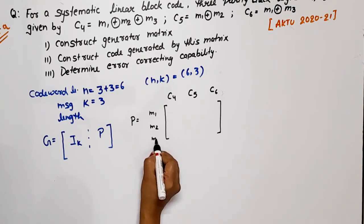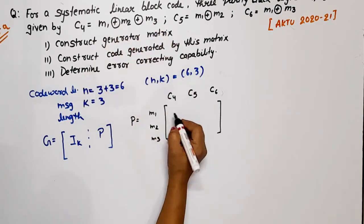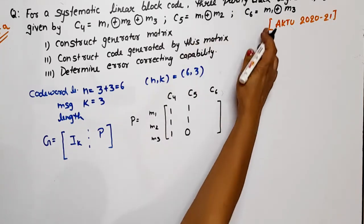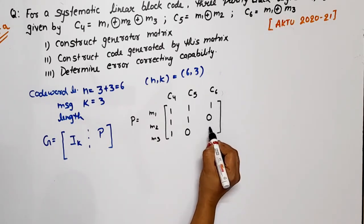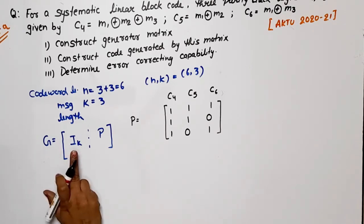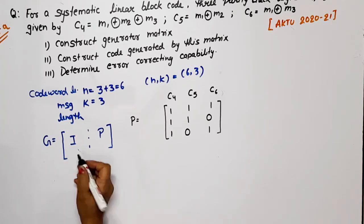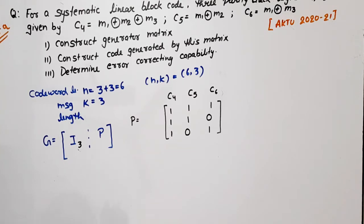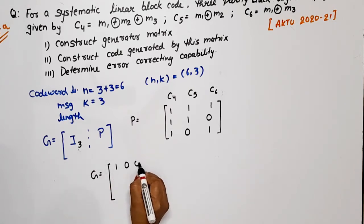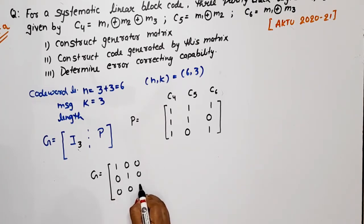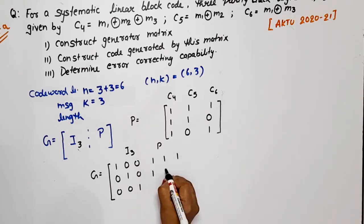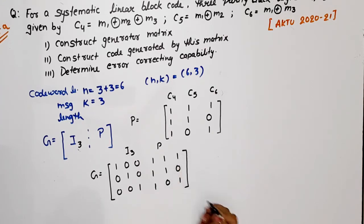For C4 = M1 XOR M2 XOR M3, all three are available, so the row is [1, 1, 1]. For C5 = M1 XOR M2, M3 is absent, so the row is [1, 1, 0]. For C6 = M1 XOR M3, M2 is absent, so the row is [1, 0, 1]. This gives us the parity matrix P. Now G = [I3 | P], where I3 is the 3×3 identity matrix, giving G as a 3×6 matrix with identity on the left and P on the right.